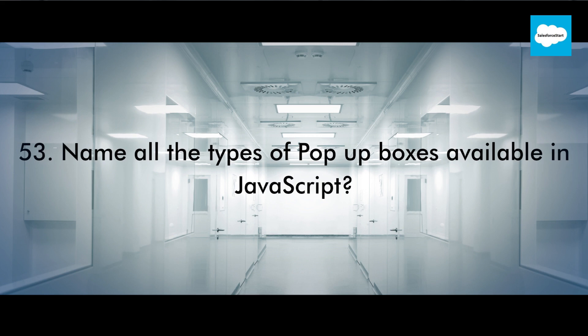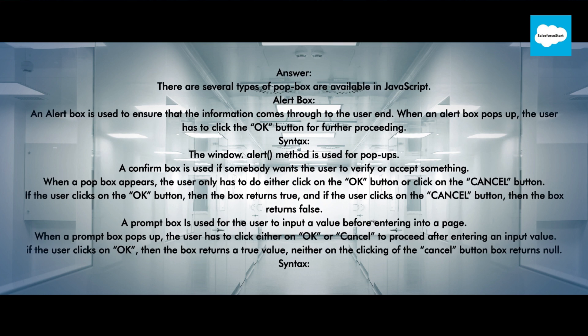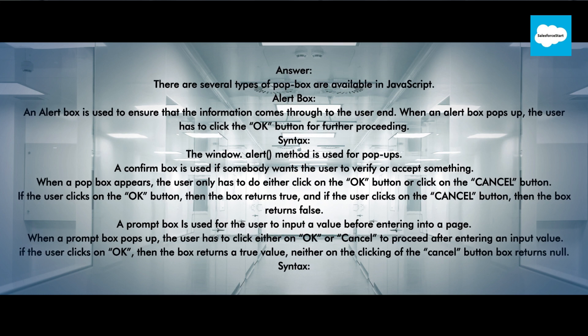Name all the types of pop-up boxes available in JavaScript. There are several types of pop-up boxes available in JavaScript. Alert box: an alert box is used to ensure that the information comes through to the user. When an alert box pops up, the user has to click the OK button to proceed.